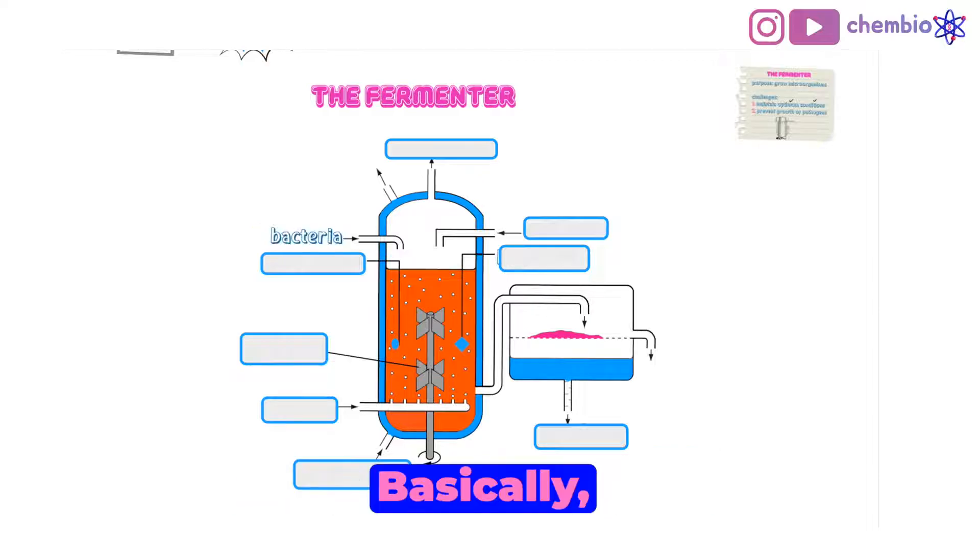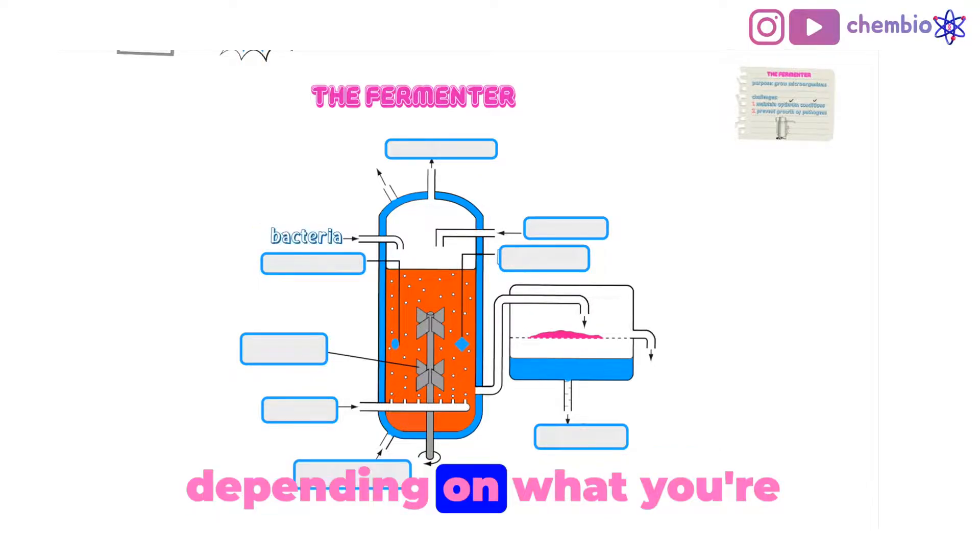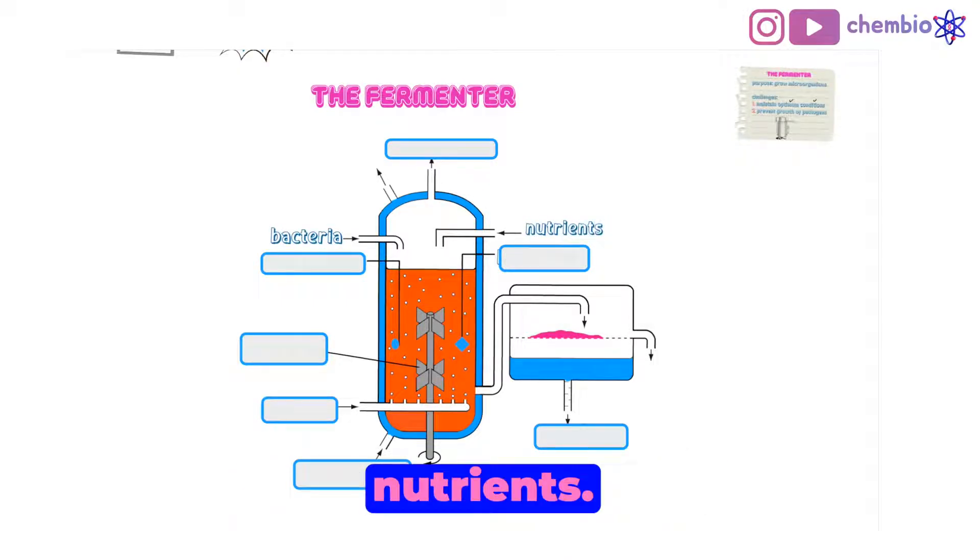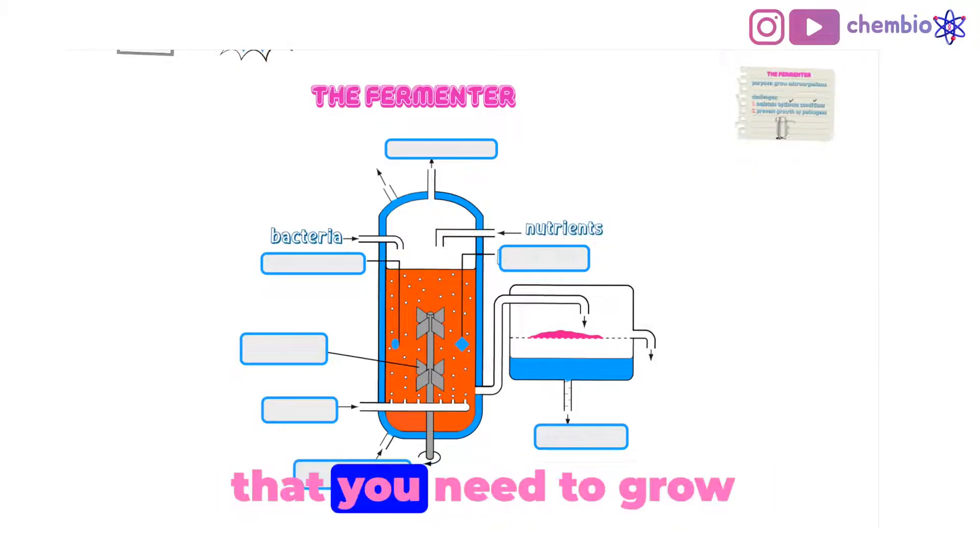One for bacteria here. Basically, this could be bacteria or fungi, depending on what you're planning to grow. And the second is for nutrients. What are these nutrients that you need to grow bacteria or microorganisms in general?